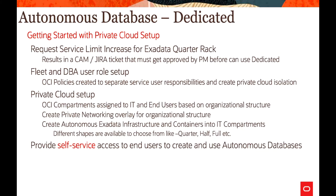Getting started with private cloud setups normally begins with requesting a service limit increase for an Exadata quarter rack. The request goes to the Oracle internal team for approval. The next step is user role setup — that is fleet and DBA roles — which are unique to dedicated Exadata Autonomous deployments. Several OCI policies are created to separate service user responsibilities.